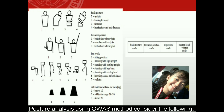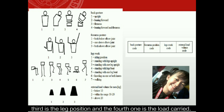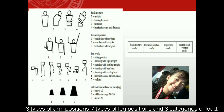Posture analysis using the OWAS method considers the following: first is the back position, second is the arm position, third is the leg position, and the fourth is the load carried. There are four types of back postures, three types of arm positions, seven types of leg positions, and three categories of load.